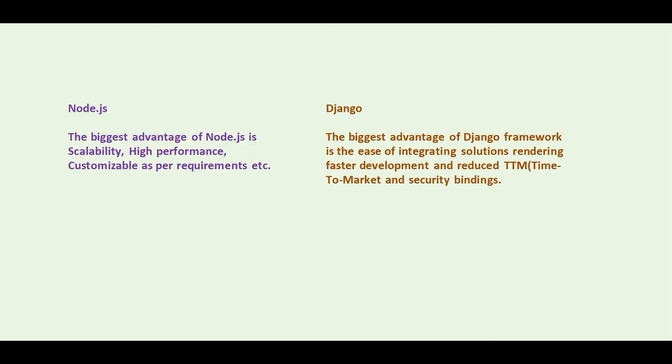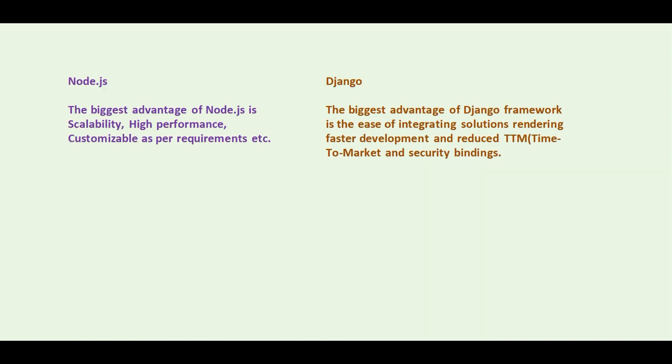The biggest advantages of Node.js are scalability, high performance, and it is customizable as per requirements. The biggest advantages of the Django framework are the ease of integrating solutions, rendering faster development, reduced time to market, and security bindings.